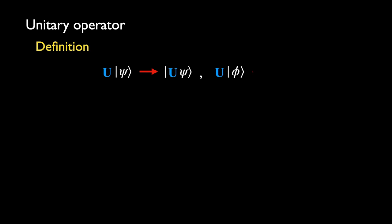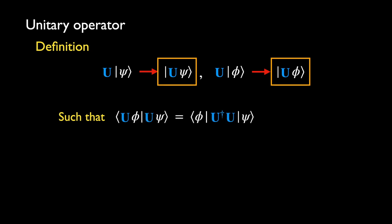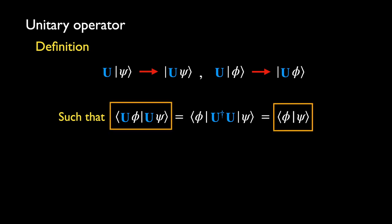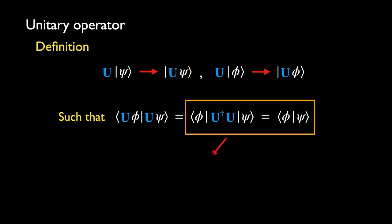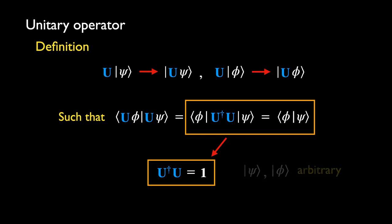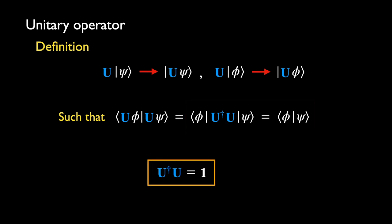A unitary operator is a linear operator which preserves the inner product between two state vectors. That is, let U act on some state psi and on another state phi. The inner product between these two resulting states must be equal to the original inner product between phi and psi, if U is unitary. The first equality comes from the fact that an operator incurs a dagger if we pull it out from a bra — this is the definition of Hermitian conjugation. The second equality implies that U-dagger U must equal the identity operator if psi and phi are arbitrary states, meaning the Hermitian conjugation of a unitary operator is also its inverse. This equation is usually the definition of the unitary operator.